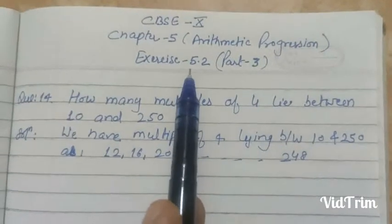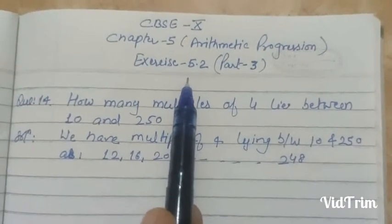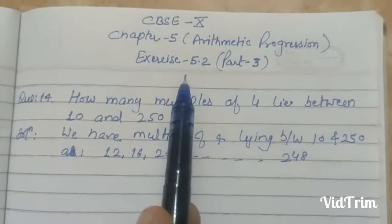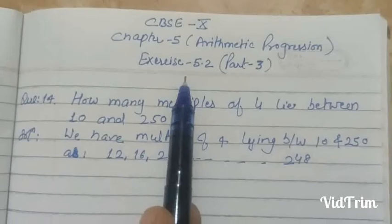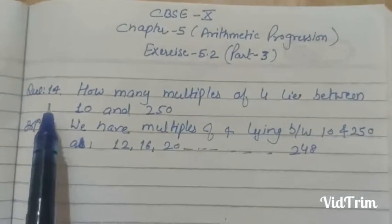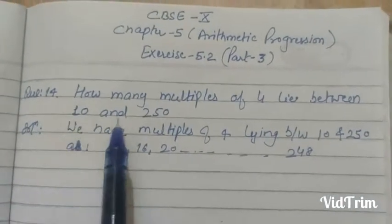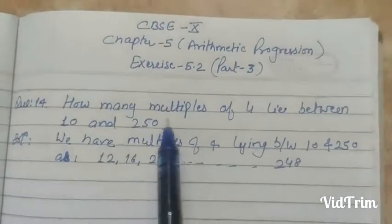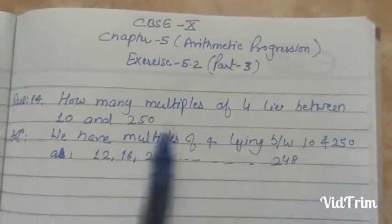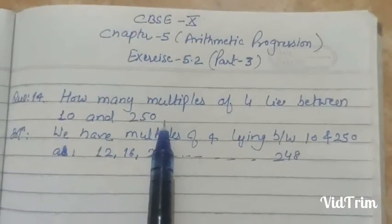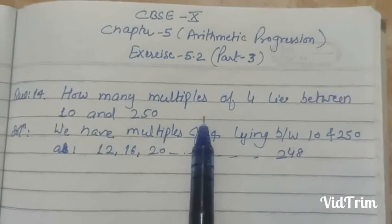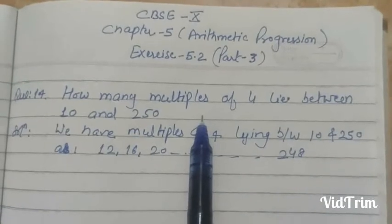Hello students, I hope you all are fine. In this video, we will continue exercise 5.2 from question number 14, that is: how many multiples of 4 lie between 10 and 250? We are to find out the number of such numbers.